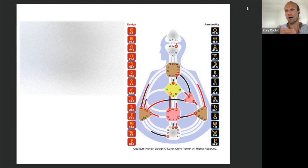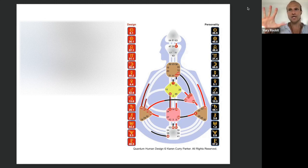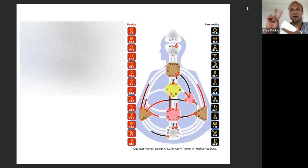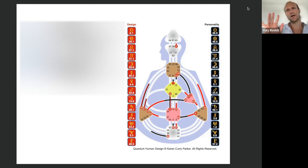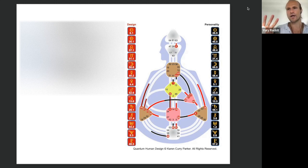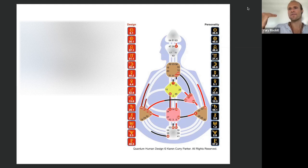What is manifesting generator? It's a hybrid of manifester and a generator. Altogether, there are five types. You're a manifesting generator, there is another type that is just generator, there's just manifesters that are only 8% of population, they're pretty rare. Then there is another type that is called projector, there are 20% of them, and then there's a reflector that is only like 1%, they're super rare. But the most common types, it's manifesting generators, we are at 30%.